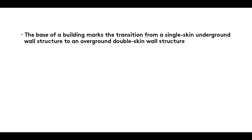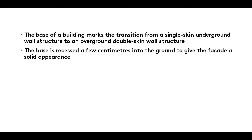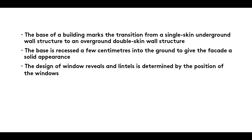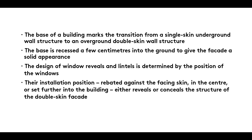Summary: The base of a building marks the transition from a single-skin underground wall structure to an overground double-skin wall structure. The base is recessed a few centimetres into the ground to give the façade a solid appearance. The design of window reveals and lintels is determined by the position of the windows. Their installation position — rebated against the facing skin, in the centre, or set further into the building — either reveals or conceals the structure of the double-skin façade.